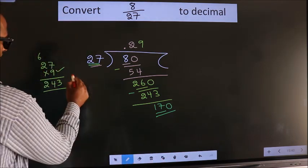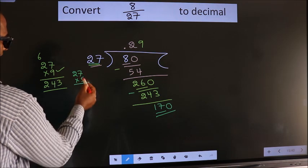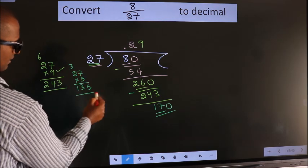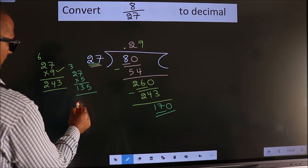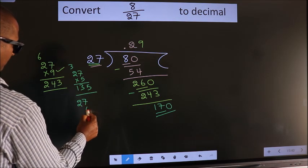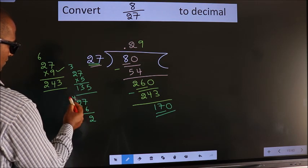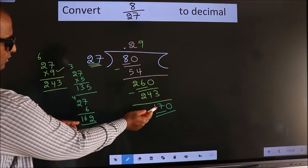So 27 times 5: 5 times 7 is 35, 5, 3. 5 times 2 is 10 plus 3 is 13. Let us even check with 6. 6 times 7 is 42, 2, 4. 6 times 2 is 12 plus 4 is 16. 162 is close to 170.